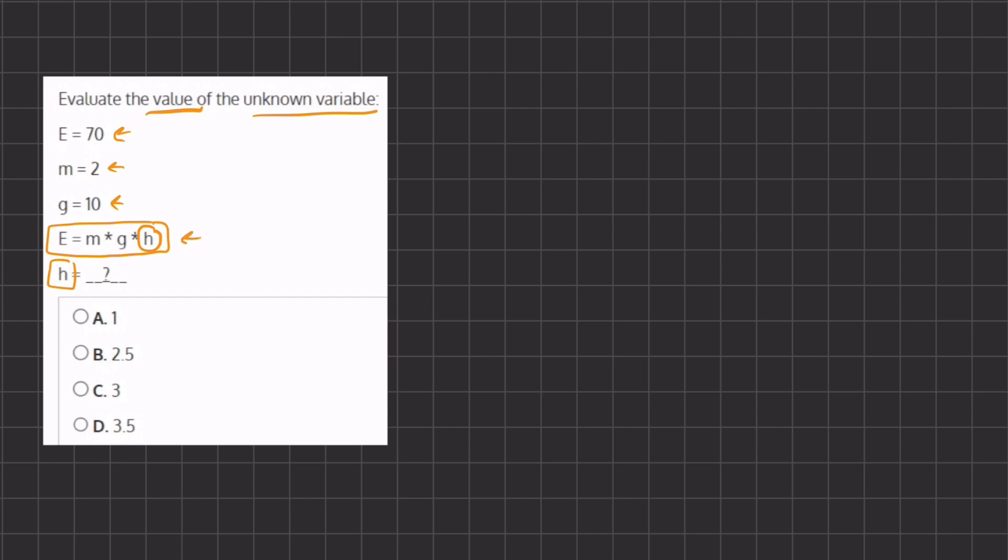Let's plug in all the values that we know into this expression. We have e, and instead of e we're going to be writing 70, equals m which is 2, times g which is 10, times h which is our unknown variable. Now let's simplify, so we have 70 equals 2 times 10 which is 20, and we have this h, so we have 20h.